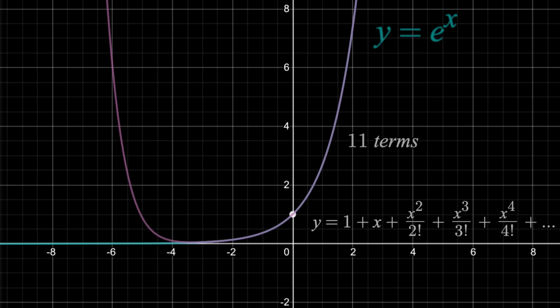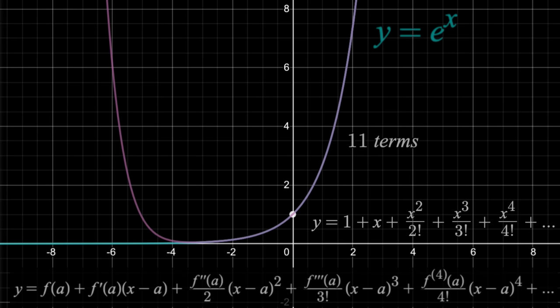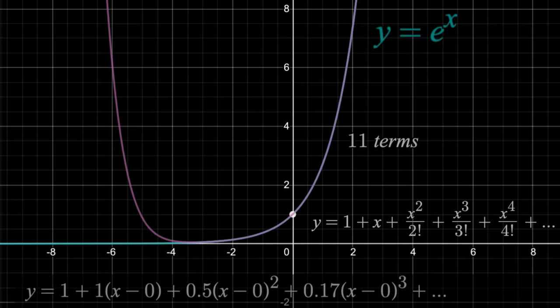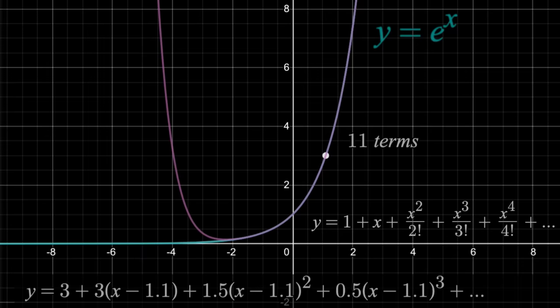The general equation for the series looks like this, and all this is is a polynomial whose derivatives at some x equals a will match those of your original f(x). When a is zero, which means your approximation is centered around that x value, like we see here, we have a McLaurin series. When we move that center point to anywhere else, then this is called a Taylor series.